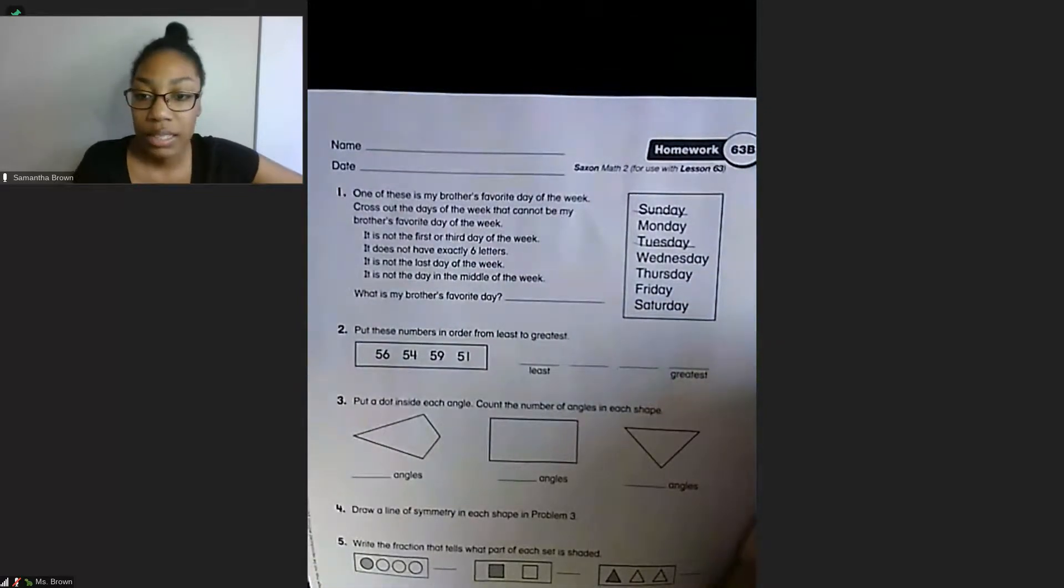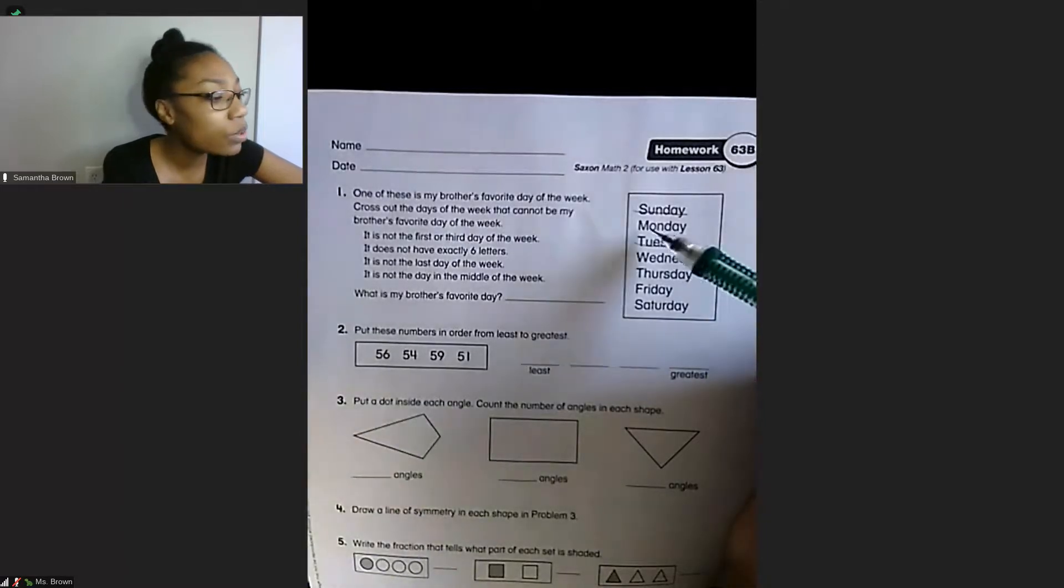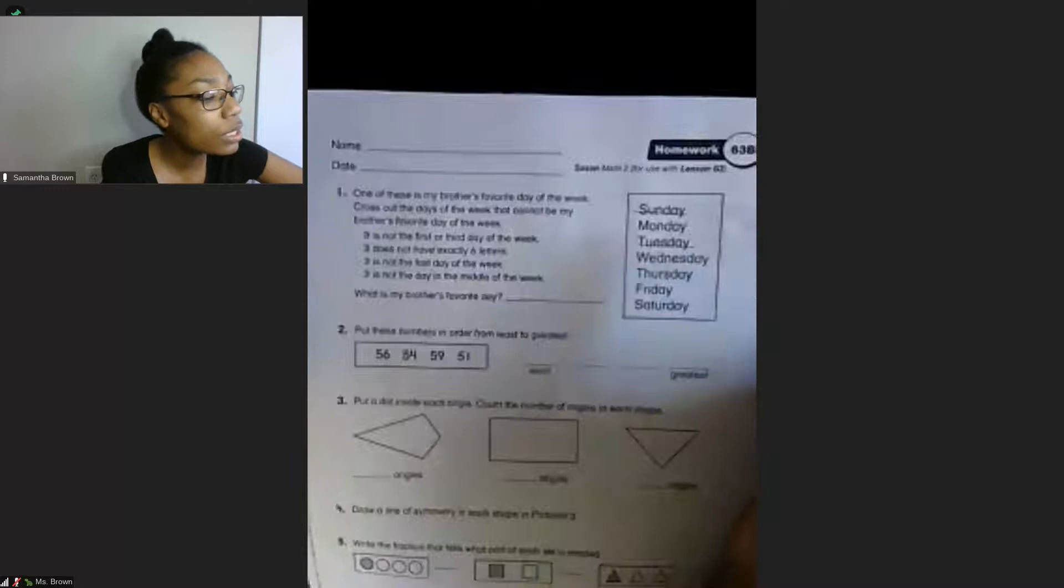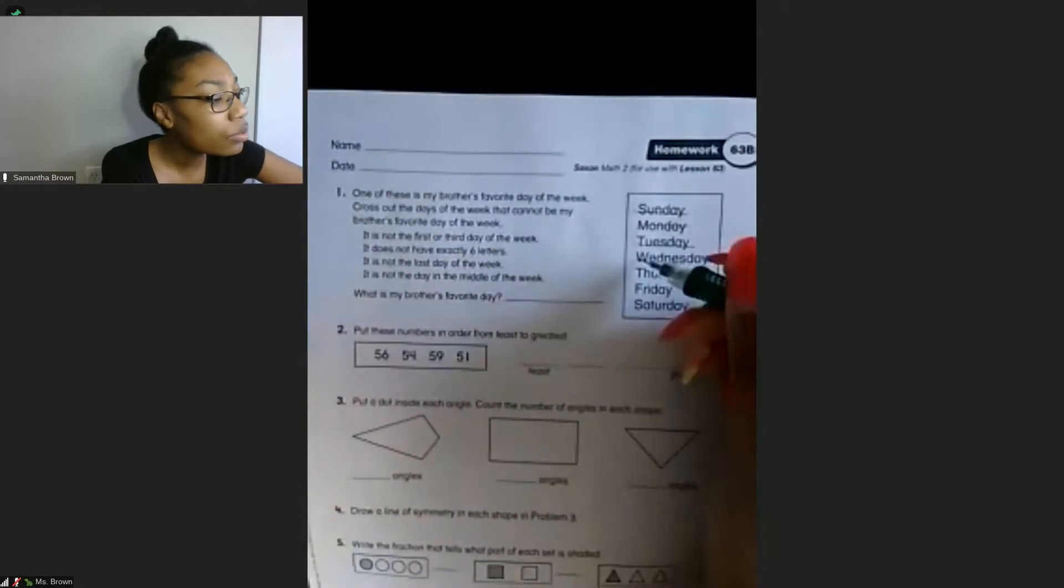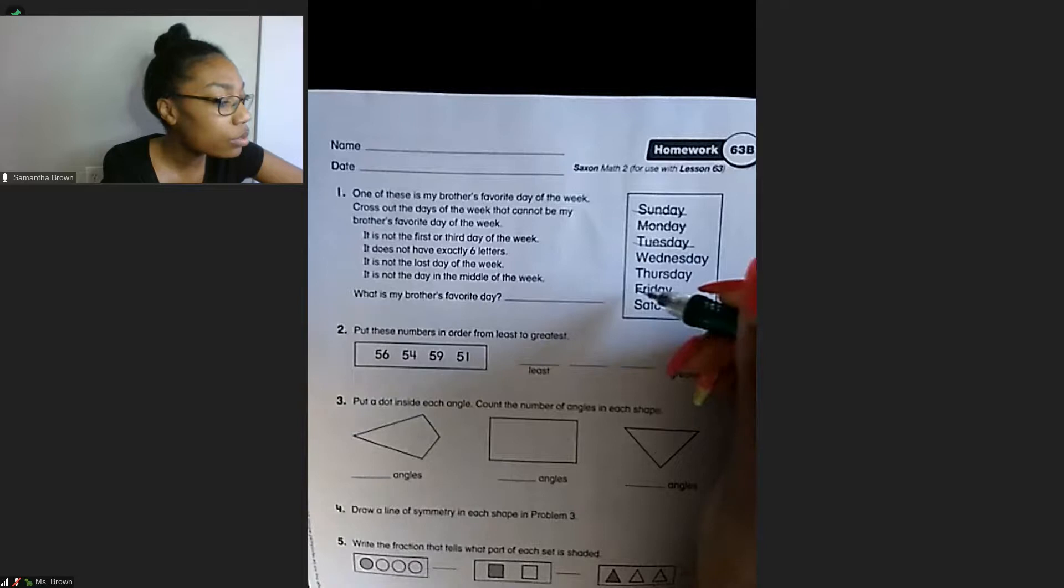The second clue says it does not have exactly six letters. So for all of the days that has six letters, we need to cross those off. Monday has four, five, six, so we need to cross that off. Wednesday is good. Thursday is good. Friday needs to be crossed off because it has six letters. And then Saturday, one, two, three, four, five, six, seven, eight, we can keep.